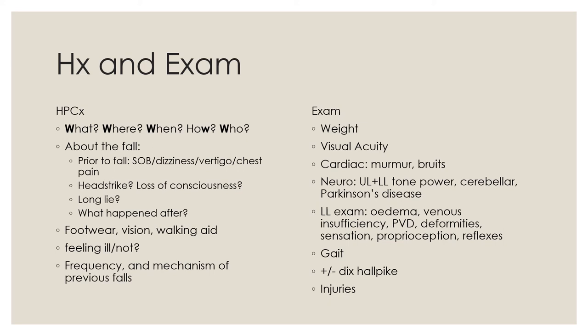Exam-wise: check their weight to assess for malnutrition or obesity; visual acuity tests for sensory deprivation; cardiac exam and neuro exam as discussed. Pay special attention to lower limbs — look for oedema, venous insufficiency, peripheral vascular disease, deformities from arthritis, sensation deprivation from diabetes, proprioception or reflex deficits, and then assess their gait. You can add a Dix-Hallpike if they have vertigo, and of course look for any injuries.